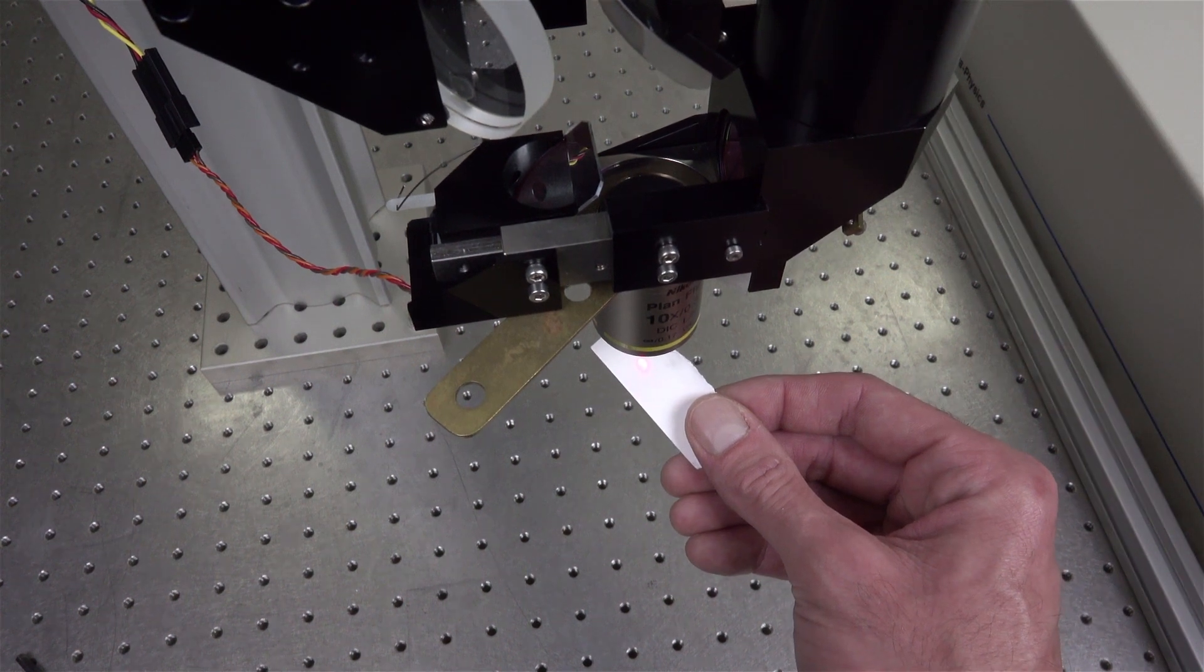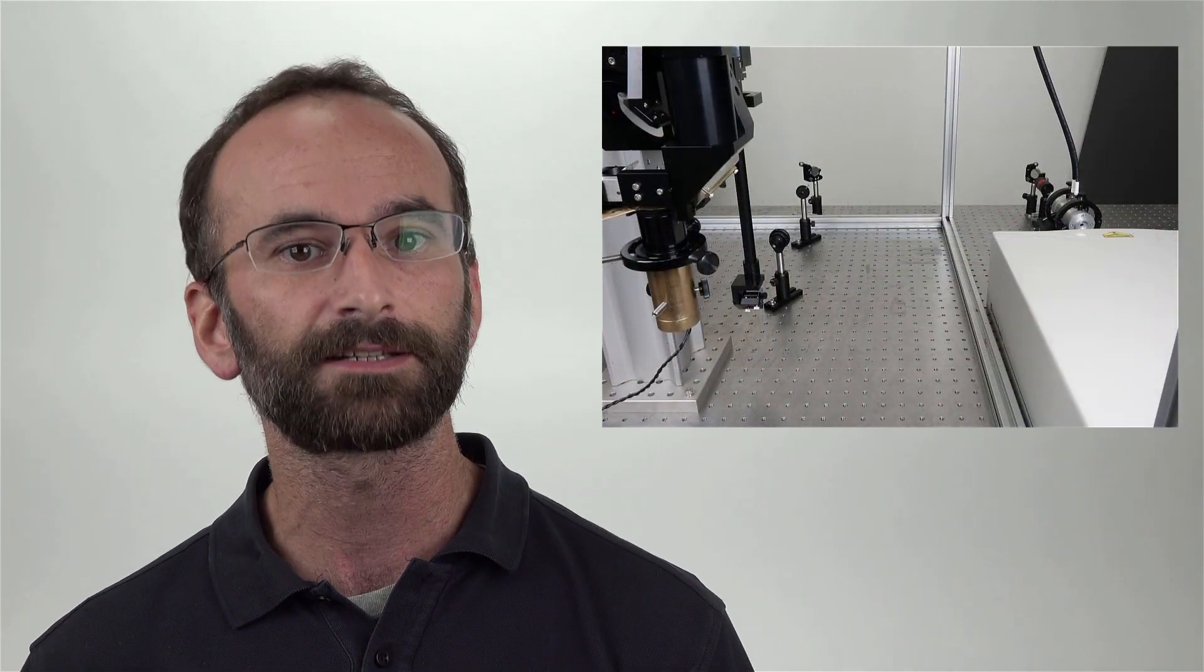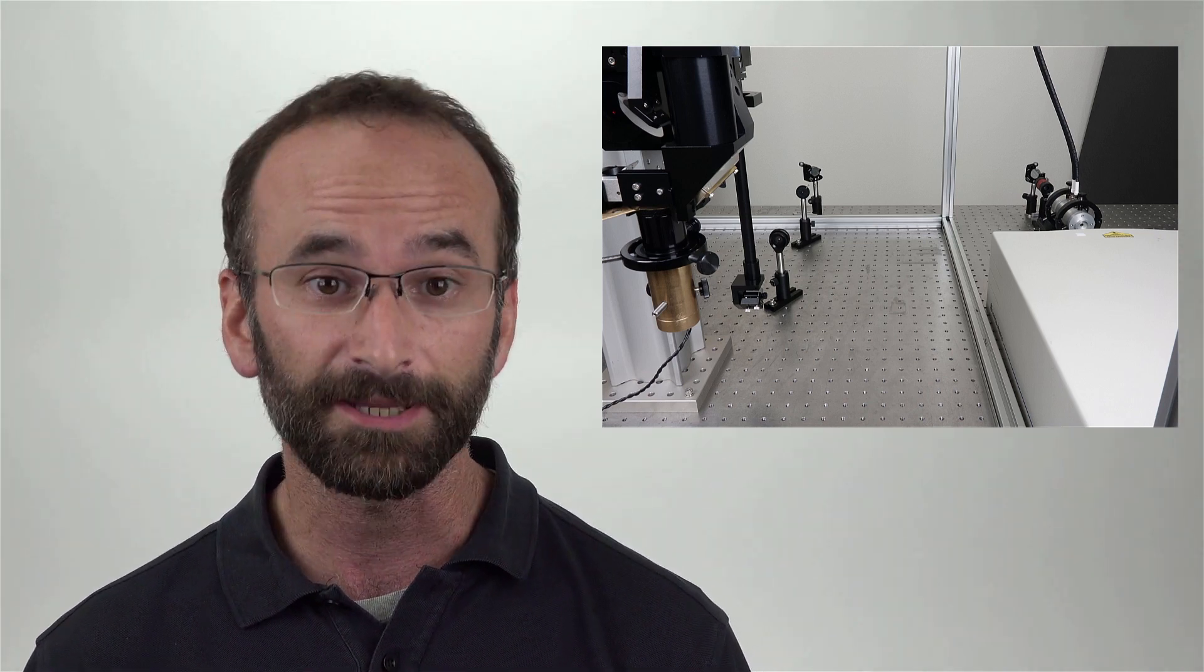Now your Sutter two-photon microscope should be optimized for imaging. This completes beam alignment of your two-photon laser scanning system, the Sutter Moveable Objective microscope. Leaving the two pinholes on the table will allow for quick checks and potentially easy corrections of the beam alignment of your system. However, if there are any unexpected variations, it's recommended to start the alignment procedure from the beginning as we have shown here. Happy imaging!